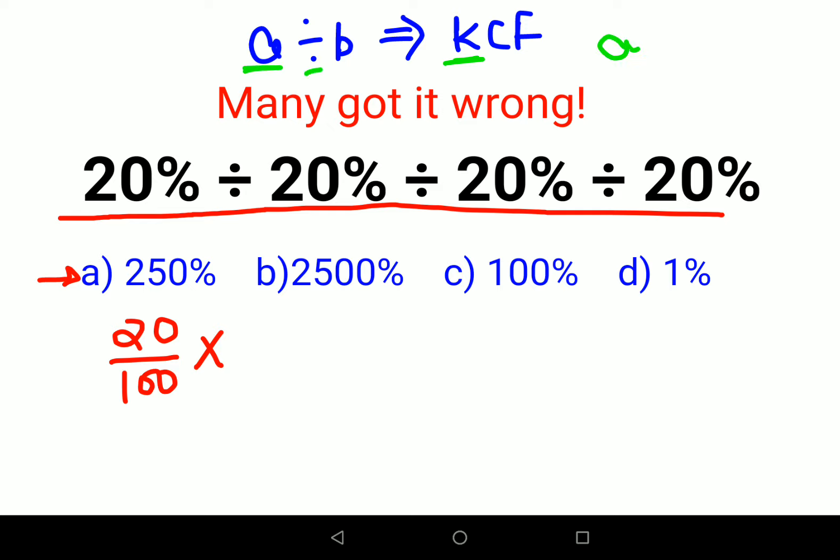So a is going to remain as it is. C means changing the division sign to multiplication, and F means flipping or taking the reciprocal, so it's 1 upon b. Similarly, here it would now be 20 upon 100, but the reciprocal of that would be 100 upon 20.